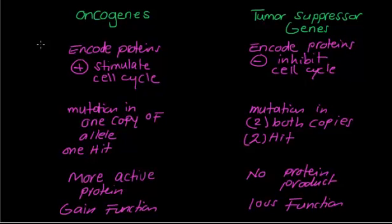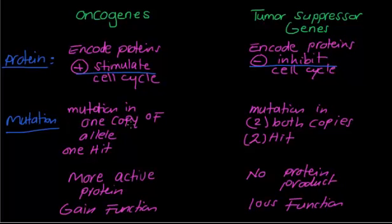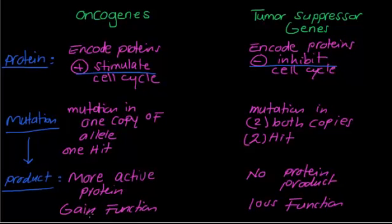You need to know these headlines very well. The proteins in the case of oncogenes stimulate the cell cycle, while the proteins in the case of tumor suppressor genes inhibit the cell cycle. Formation of an oncogene requires mutation in one copy of the allele, and formation of a tumor suppressor gene requires mutation in two copies of the allele. The resulting protein product is either more active — gain of function — or absent — loss of function.